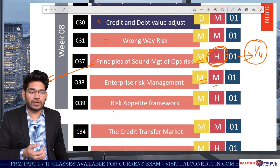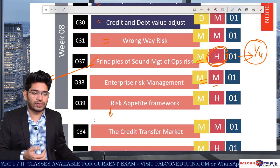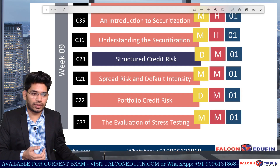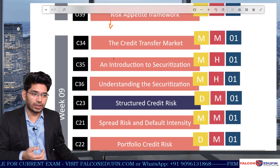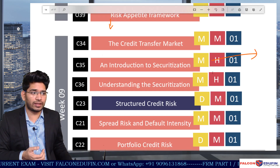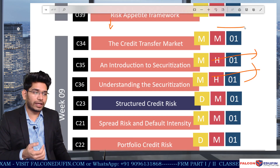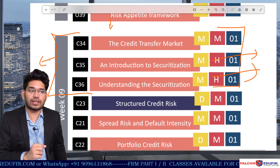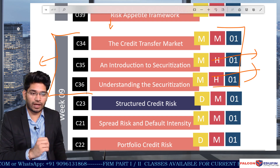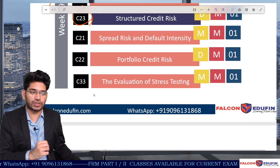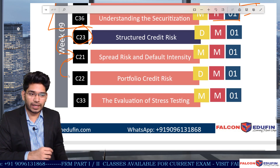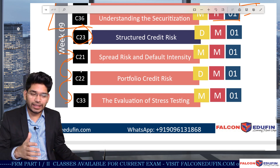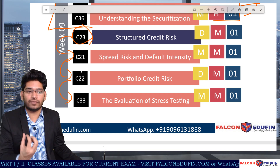Then we have Enterprise Risk Management — a medium topic at medium difficulty — followed by the risk appetite framework, which is a theoretical topic. Then there is the credit transfer market, and securitization under structured credit risk, which is a very lengthy topic. These topics are all connected in combination: structured credit risk connects with credit spread topics in a linking chain, and studying them in this sequence helps you understand the material better.